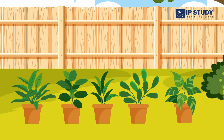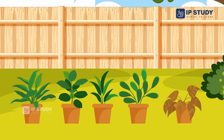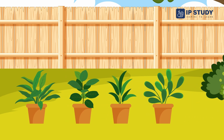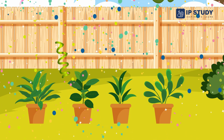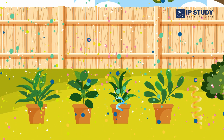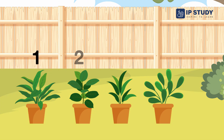In my garden I have 5 plants, of which 1 plant is damaged. Tell me how many plants I have available. That's right — I have 4 plants.